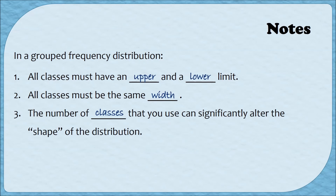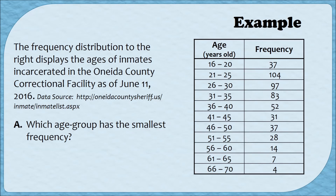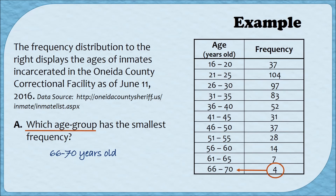Let's do an example of interpreting a grouped frequency distribution. The frequency distribution displays the ages of inmates incarcerated in the Oneida County Correctional Facility as of June 11, 2016. Question one: which age group has the smallest frequency? I look for the smallest number in the frequency column, which is four. That corresponds to the age group 66 to 70 years old.